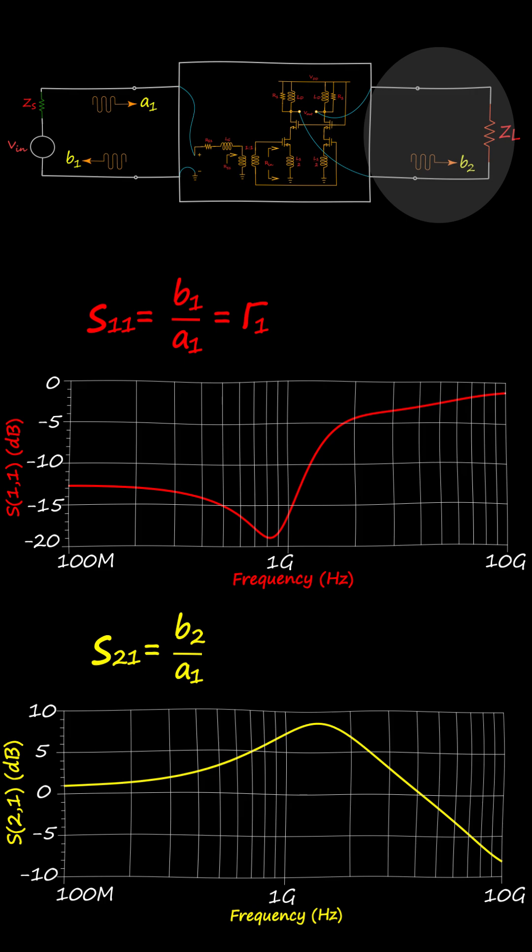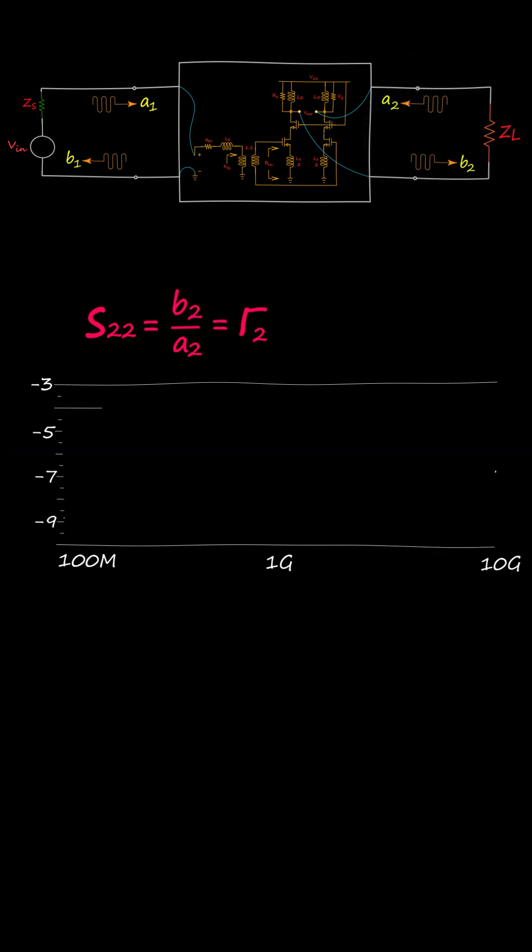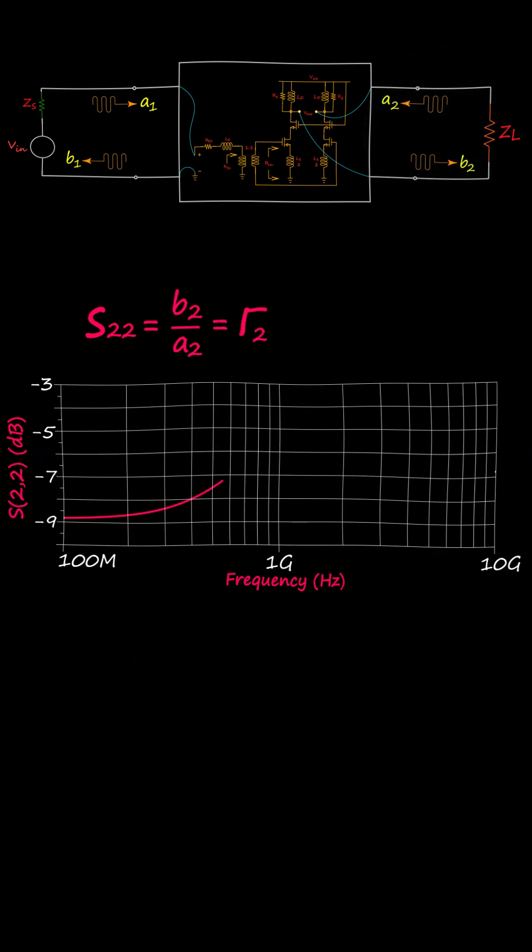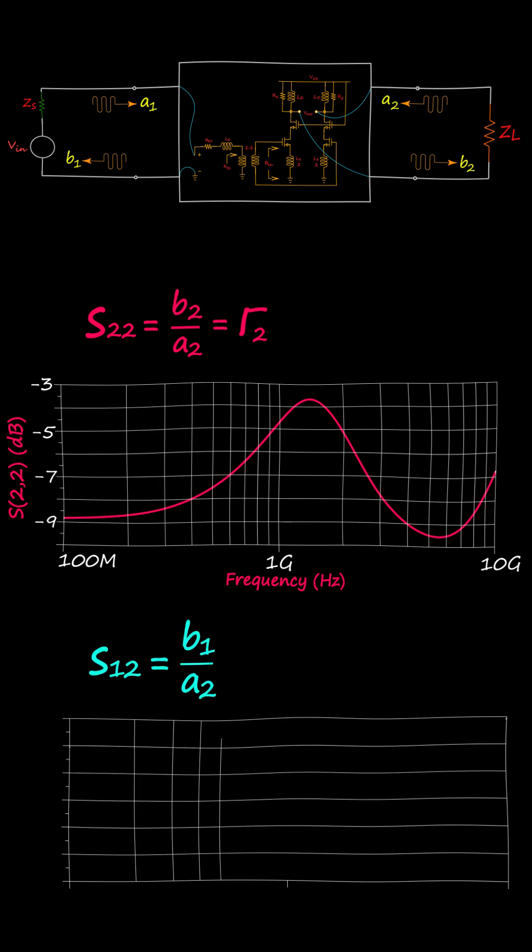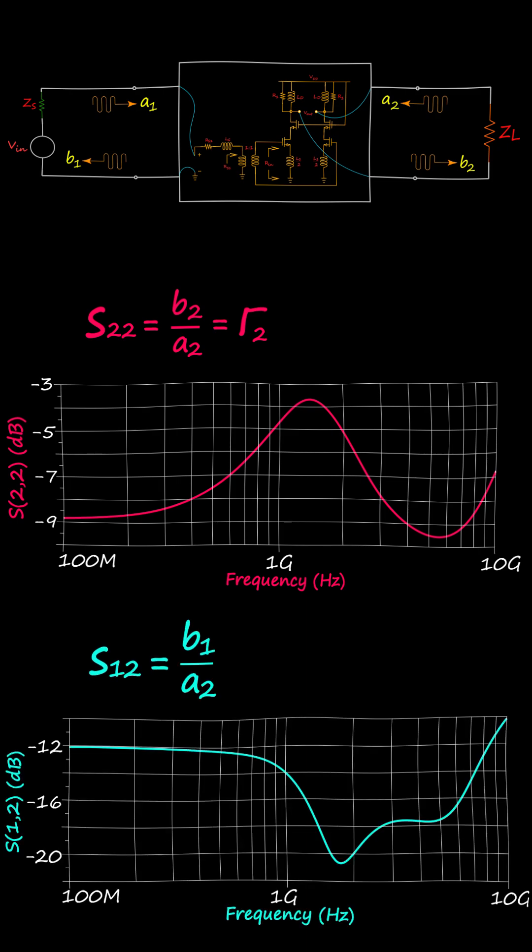By reaching the load, part of B2 is absorbed and the other part, A2, is reflected back to the output port to be transmitted back to the source. Similarly, S22 is the ratio of A2 over B2, the reflection coefficient at port 2. S12 is B1 over A2, the reverse transmission gain, or the gain in the backward direction.